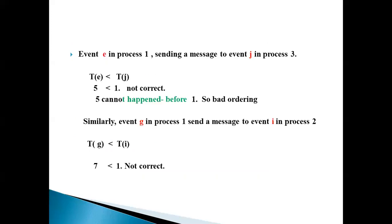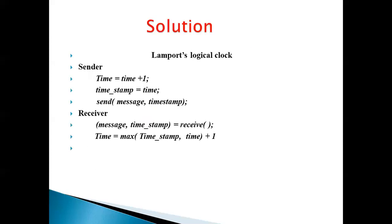Take the next one. Event E in Process 1 sends a message to event J in Process 3. Compare the times: the time of sender event E is 5 and the time of receiving event J is 1. 5 < 1 — not correct, so 5 cannot happen before 1 — bad ordering. Similarly, event G in Process 1 sends a message to event I in Process 2. The time of sender G is 7 and the time of receiver I is 1. 7 < 1 — not correct. So what is the solution?